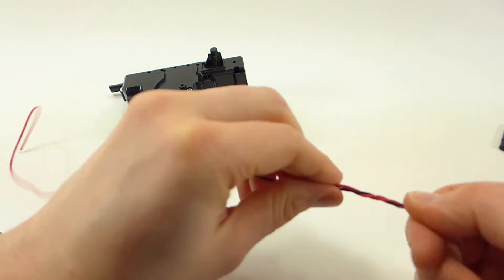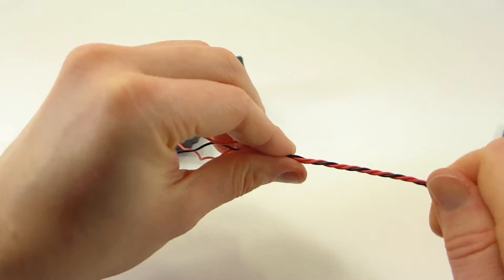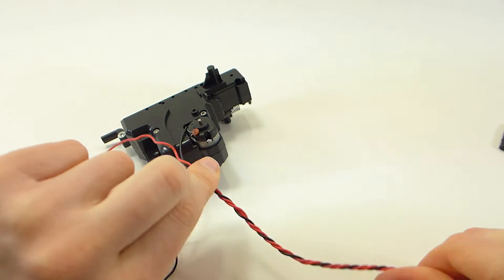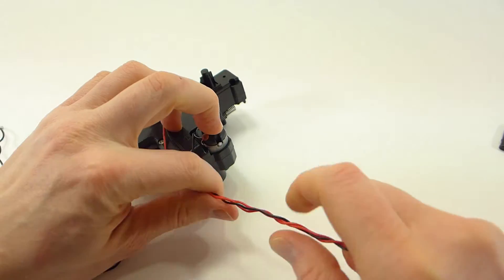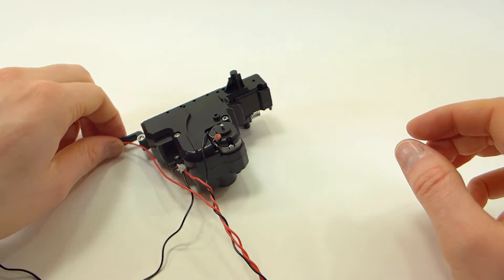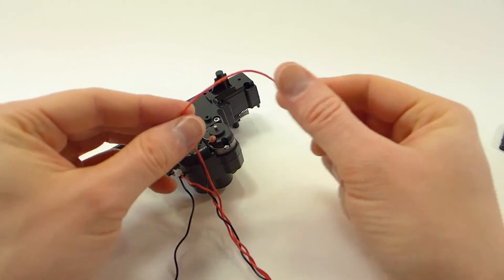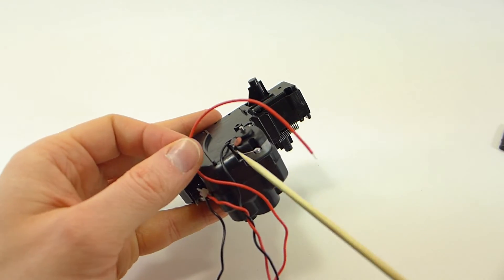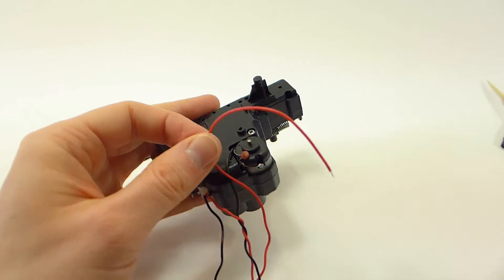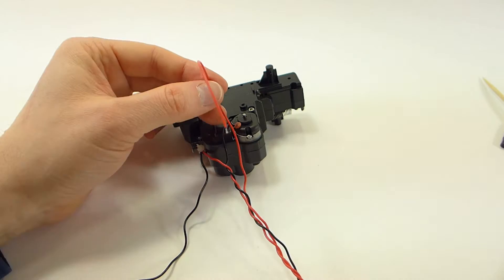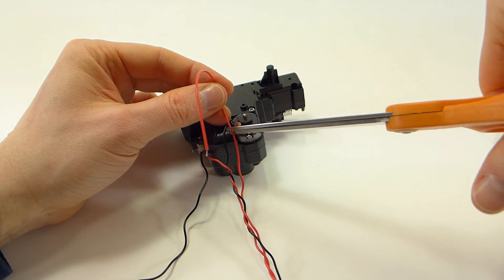But first I'm going to twist these wires up just to make it a little easier to see. So again we have this red wire coming from the three-pin plug and we're going to solder it to the motor positive terminal. We might need to cut the wire, it's probably a little bit too long.